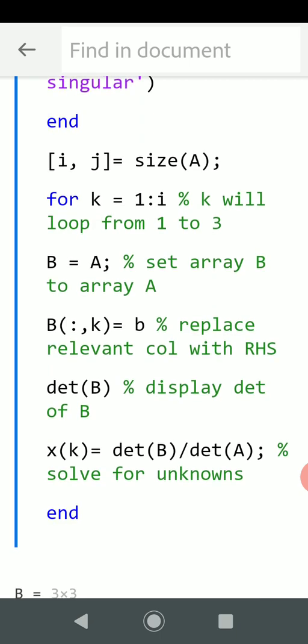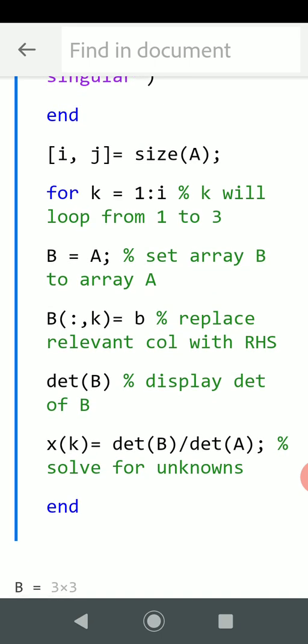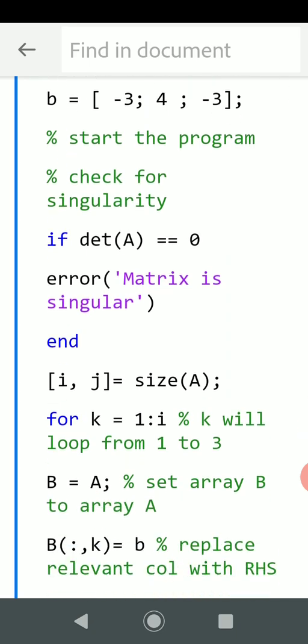go there, B with round brackets, colon k, so that's all the rows, column k, which is all the rows, column 1, we slip in b. And b there is -3, 4, -3.